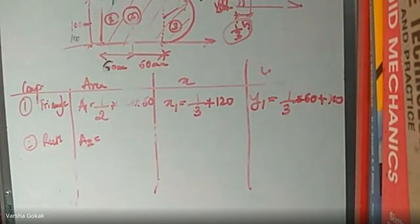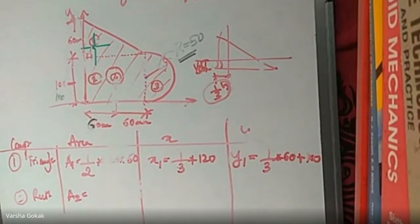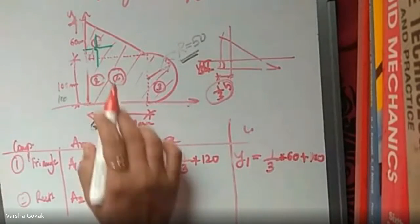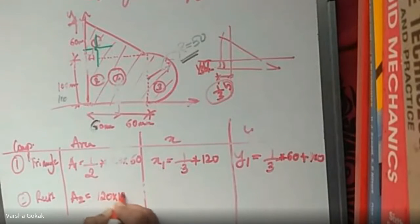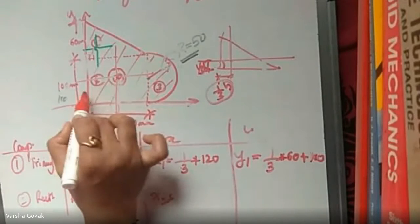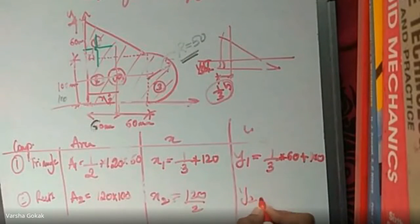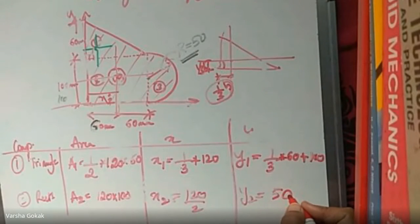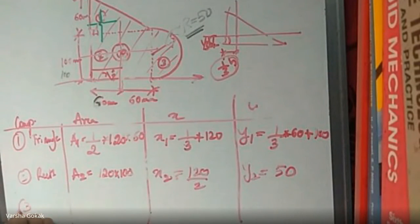Second component: rectangle. Area A2 = 120 × 100. For x2: CG is at center = 120/2 = 60. For y2: CG is at 100/2 = 50, since it is touching the reference axis.